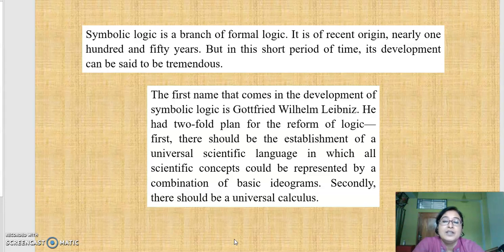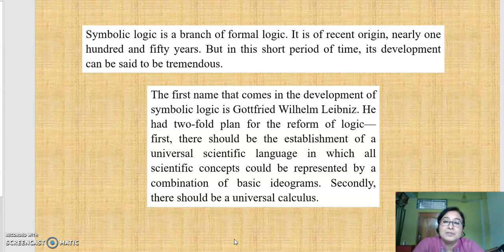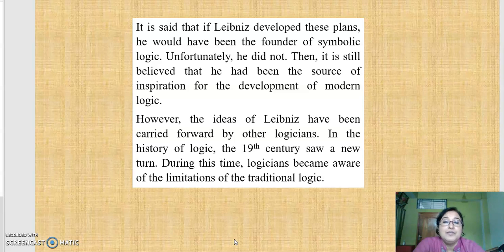The first name that comes in the development of symbolic logic is Gottfried Wilhelm Leibniz. He had a two-part plan for the reform of logic. First, there should be the establishment of a universal scientific language in which all scientific concepts could be represented by a combination of basic ideograms. Secondly, there should be a universal calculus.